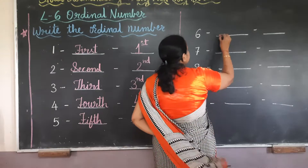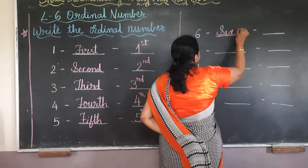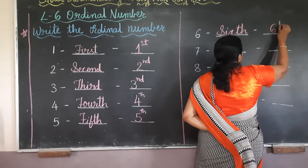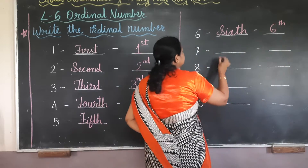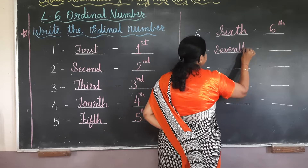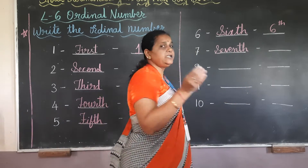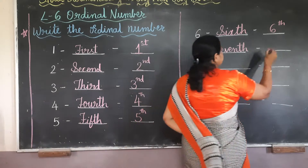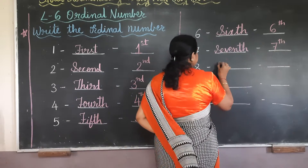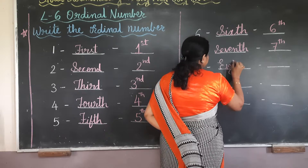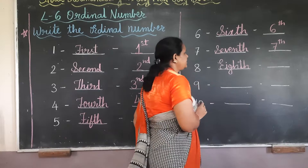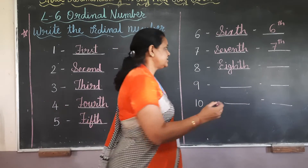For 6th, we say sixth, and we write 6th. For 7th, we write the same spelling but add TH — 7th. For 8th, the spelling is E, I, G, H, T, H — eighth, and we write 8th.